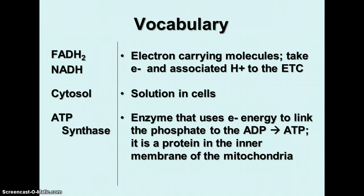Vocabulary terms you need to know: FADH2 and NADH are the electron-carrying molecules, which carry electrons and their protons to the electron transport chain. The cytosol — basically the same thing as cytoplasm — is the solution in cells where some of these reactions occur. And ATP synthase is an enzyme that uses electron energy to add a phosphate to ADP to make ATP.